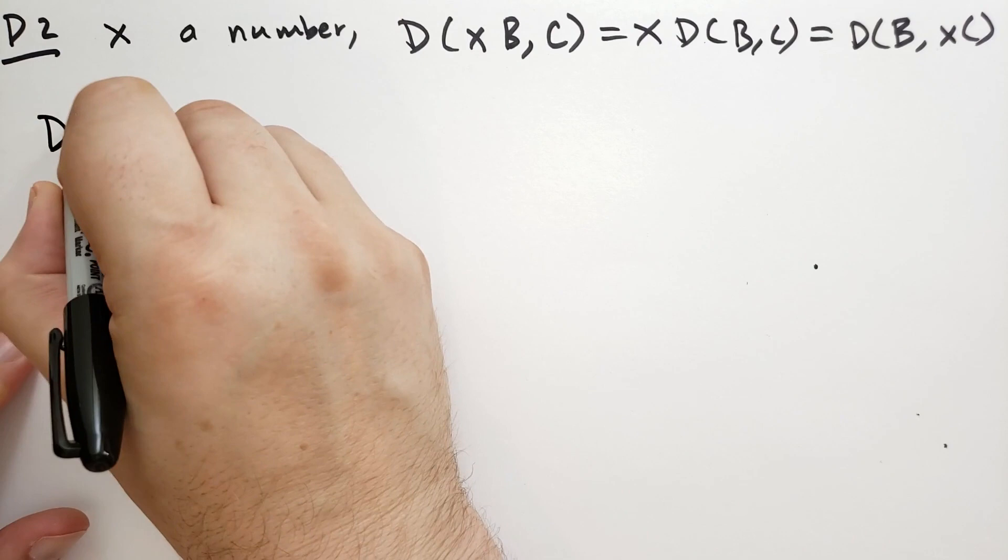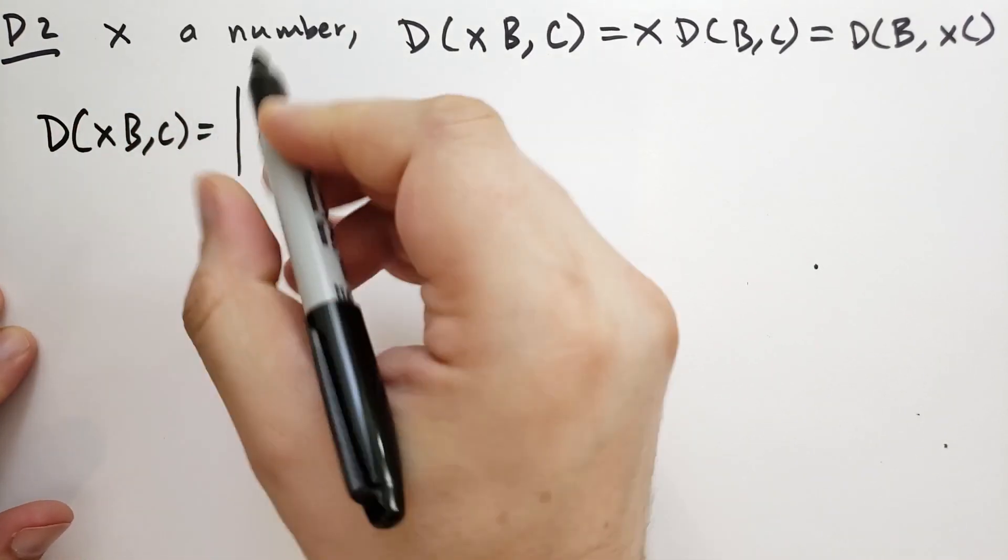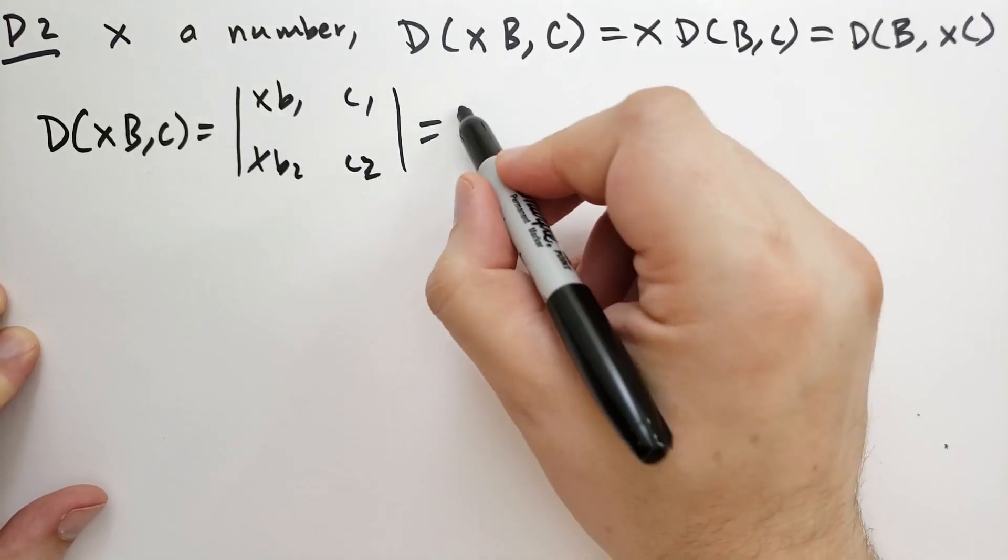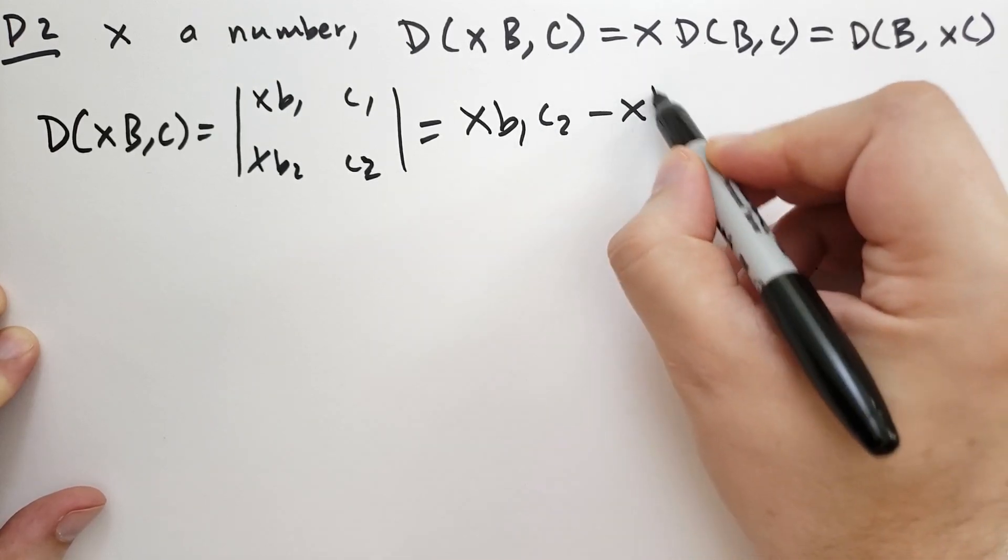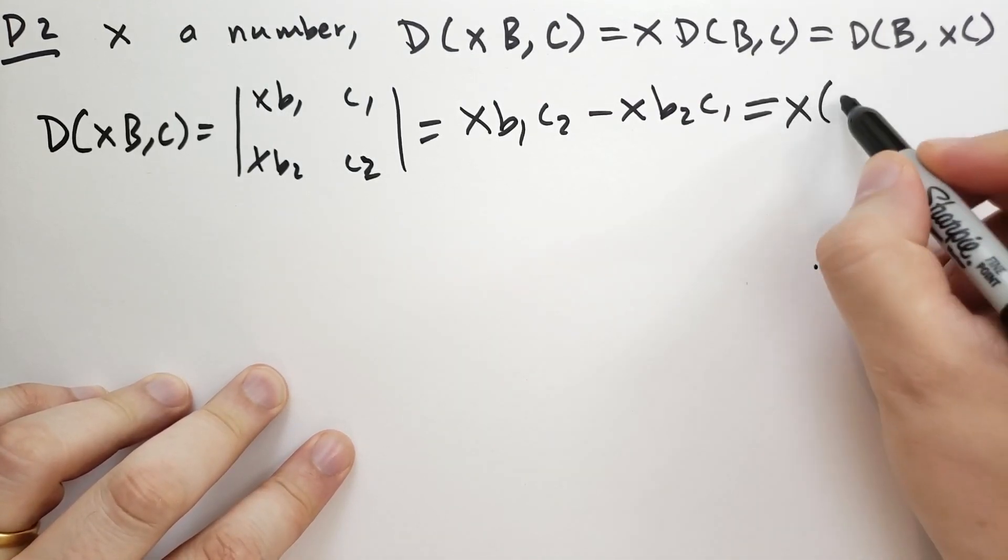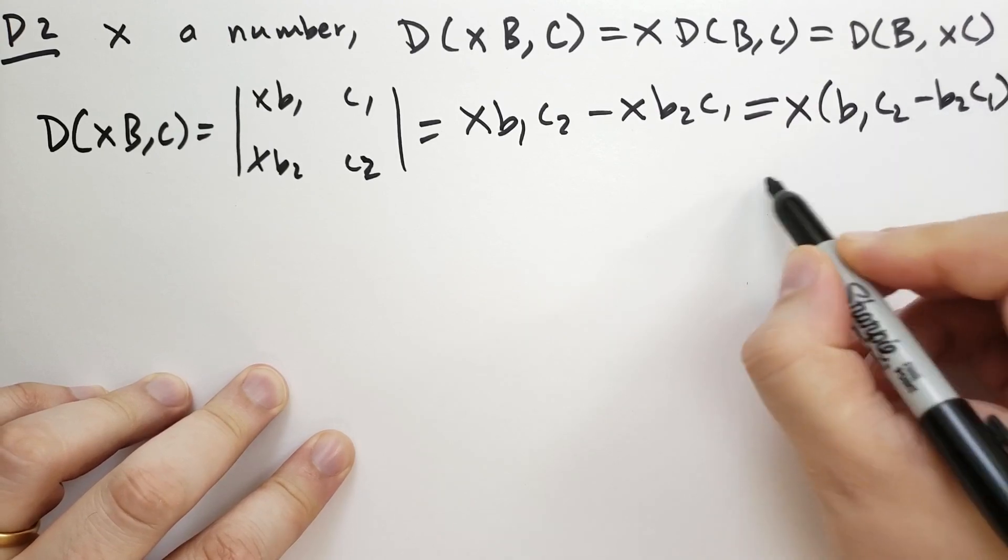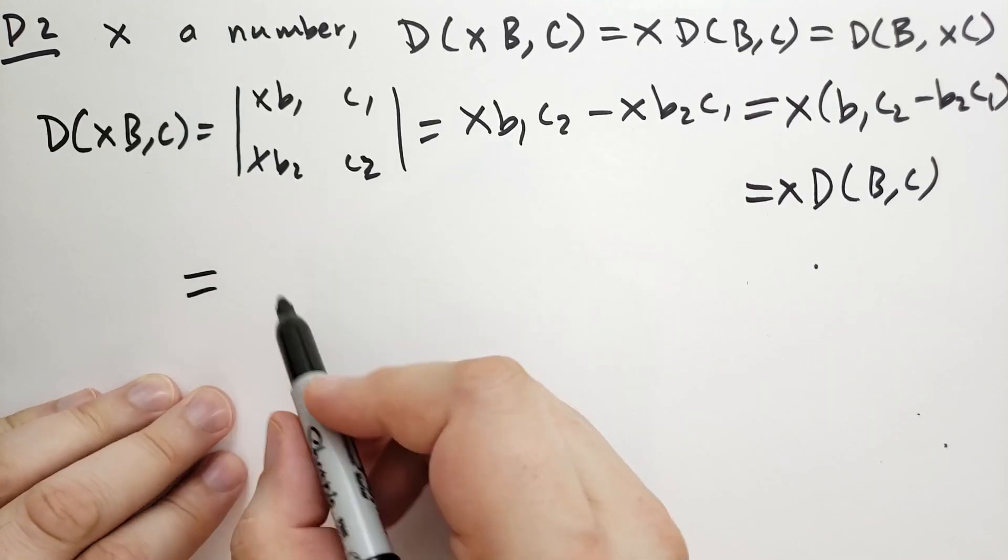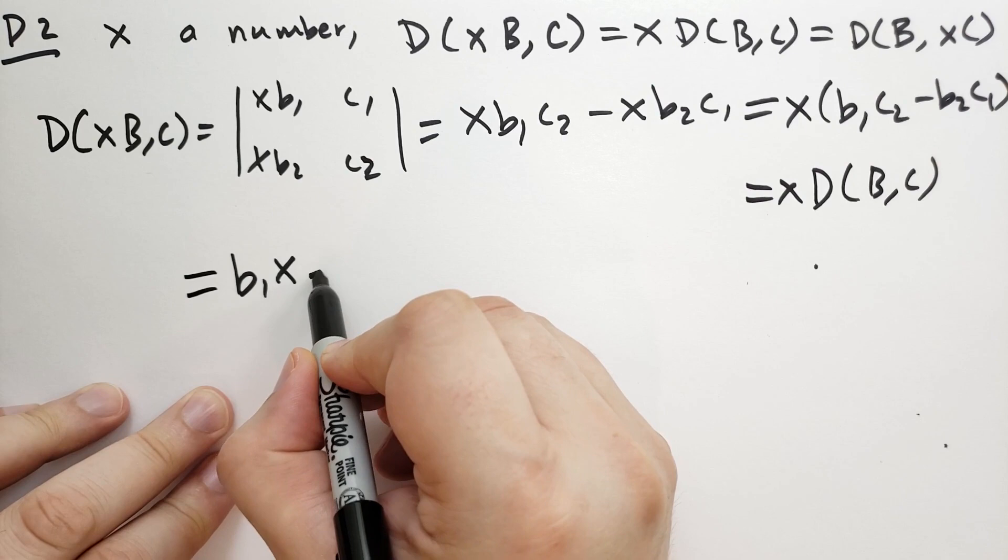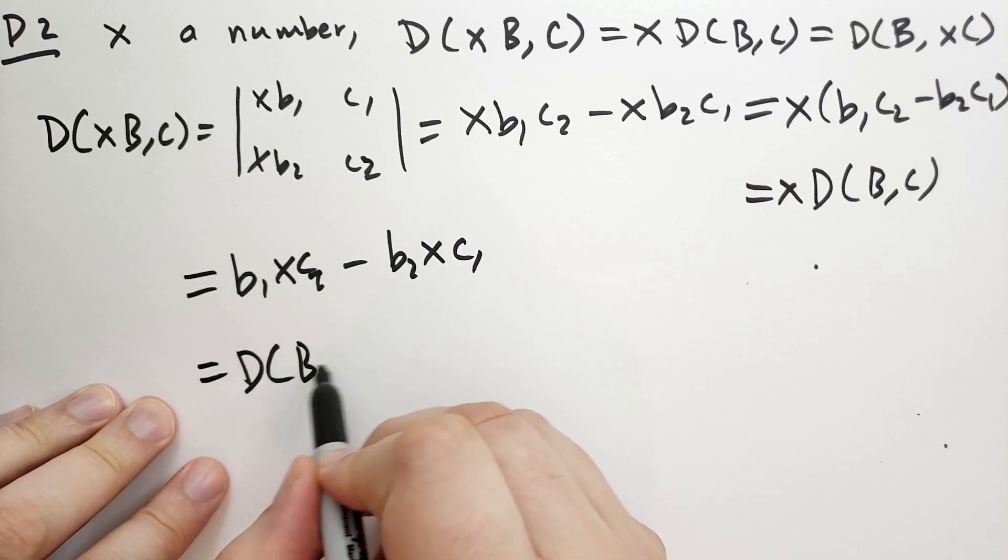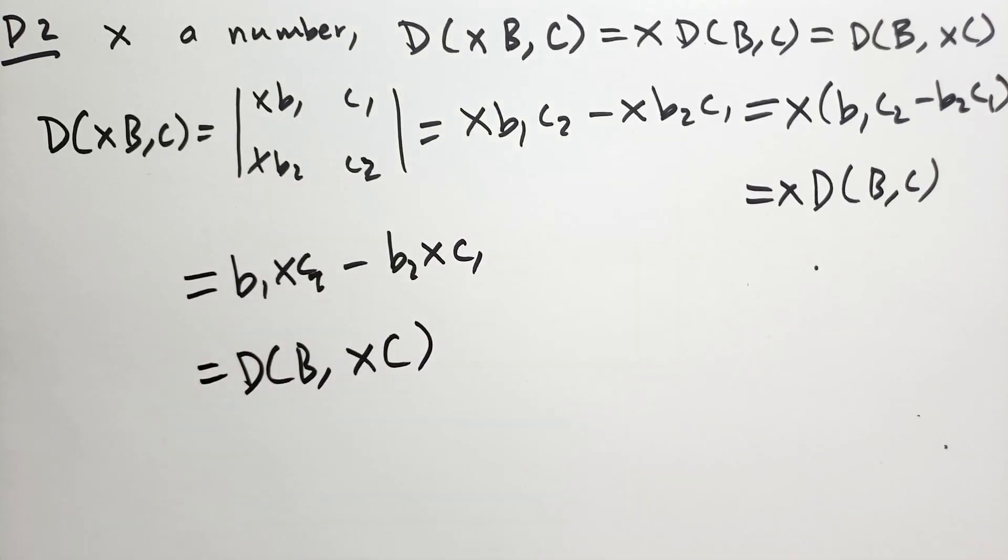The proof is rather easy. So we have D of XB, C is equal to the matrix XB1, XB2, C1, C2, which is equal to XB1C2 minus XB2C1, which, as you can see, is equal to X times B1C2 minus B2C1, which is just X times the determinant of B and C. Another way to look at it is this is also equal to B1 times XC2 minus B2 times XC1. So that's the same as the determinant of B times XC. Very simple to do.